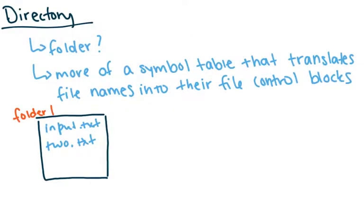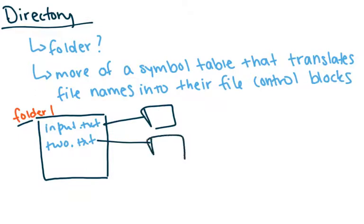So what's a directory? Usually in Linux and Unix, you associate a folder with a directory, which is pretty much the case. But really, you should think of it as more of a symbol table that translates file names to their file control blocks. So this directory keeps track of file names and their file control blocks — all of their metadata — and also keeps track of how they're actually being stored and where they are on the computer.